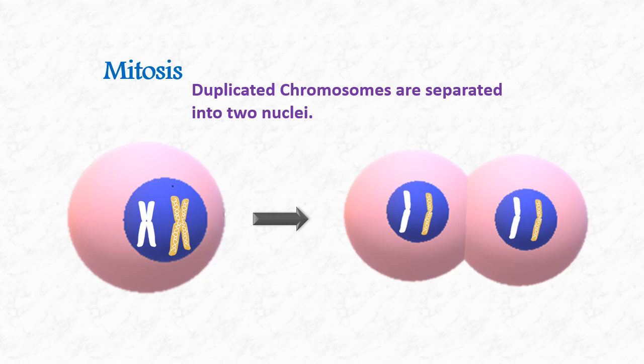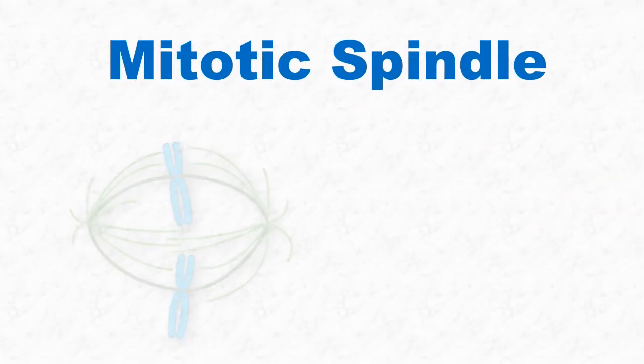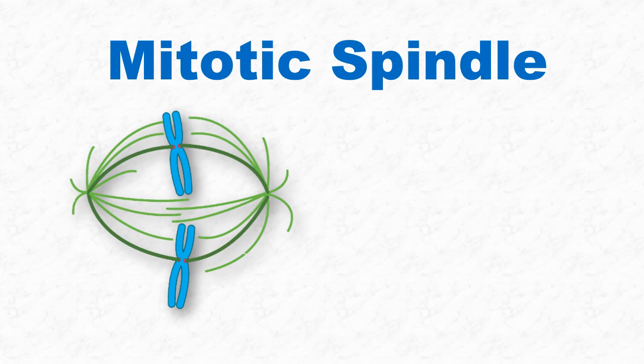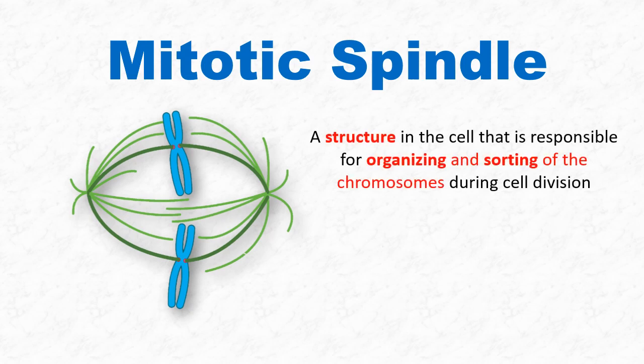Now the question here is, how these sister chromatids get separated? The answer is mitotic spindle. The mitotic spindle is a structure in the cell that is responsible for organizing and sorting of chromosomes during cell division.